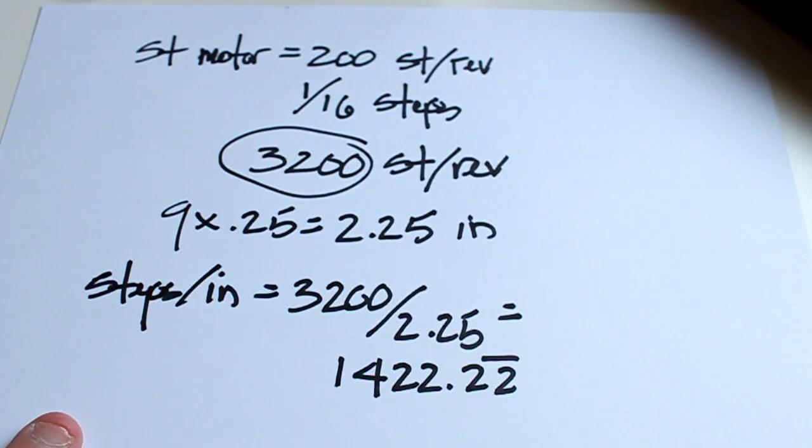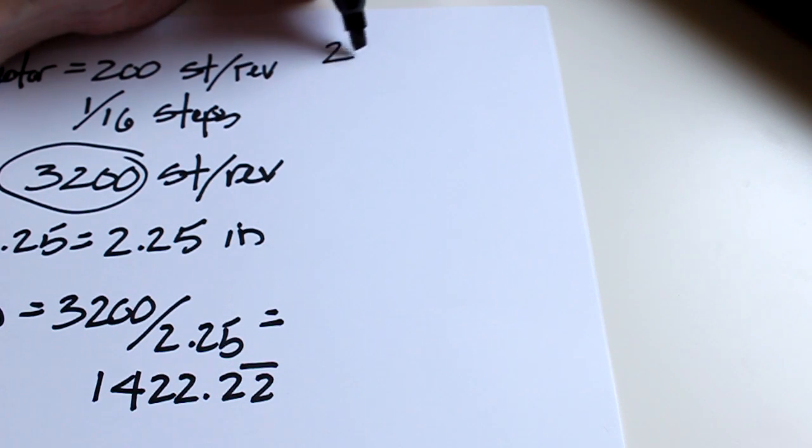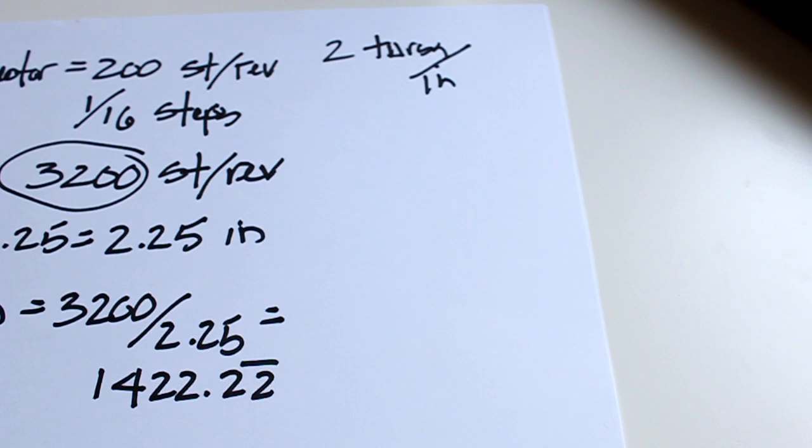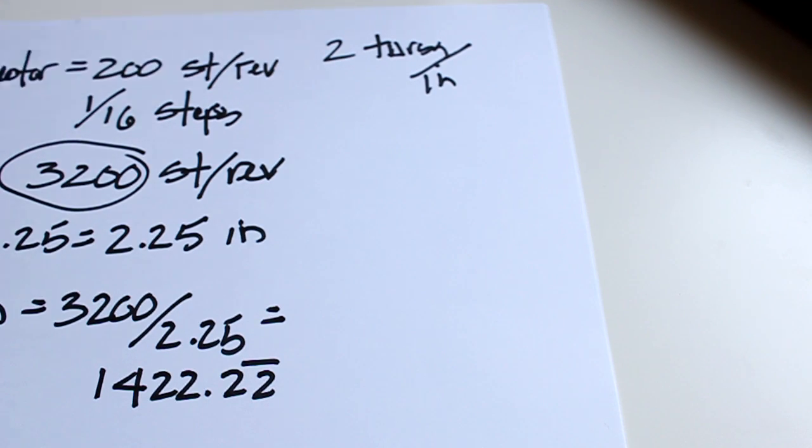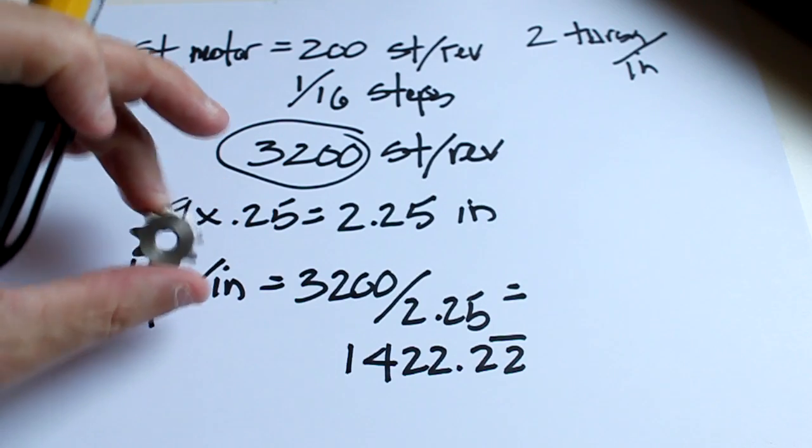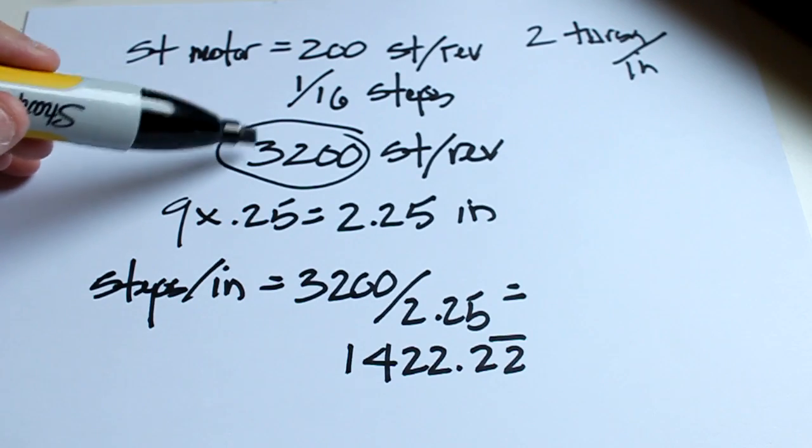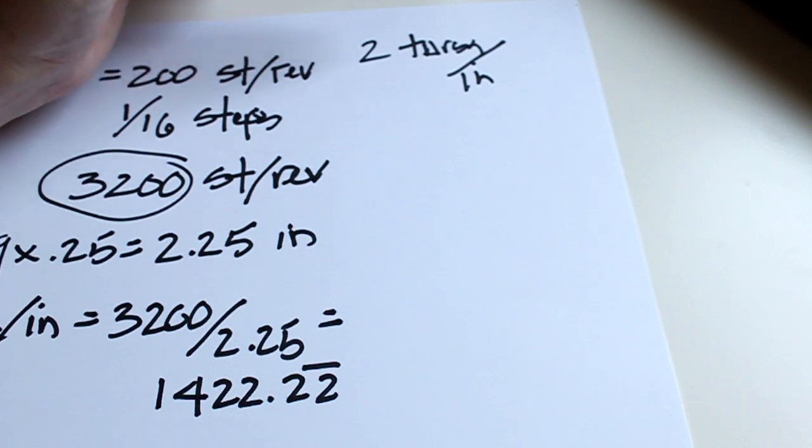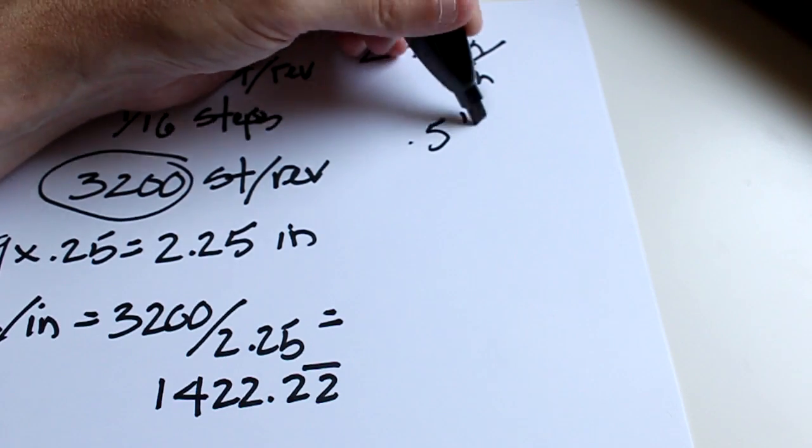Now when it comes to lead screws, I generally use a lead screw that has two turns per inch. To get the lead out of that, the linear inches, you'll need to know how far it will travel with one turn. In this case, in one turn of a two turns per inch lead screw, it's going to travel 0.5 inches.